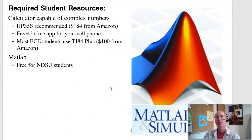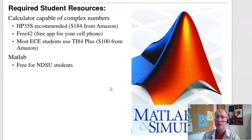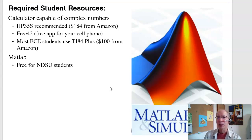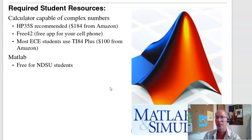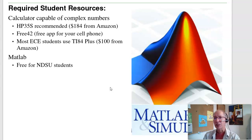For required student resources, you'll need a calculator that can do complex numbers. I recommend HPs — they're worth about 10 points on a test. Options include the HP 35S at $184 on Amazon, or the Free42 app (a free cell phone emulator of the HP 42 — in my opinion, the best calculator ever made). You can also use a TI-84+, but note that TI-84s really struggle with complex numbers, and we do a lot of complex numbers in this class.